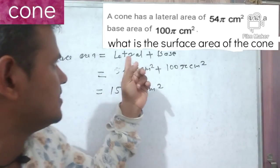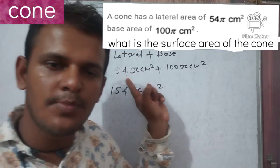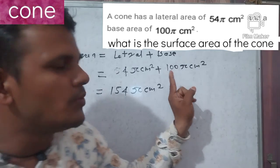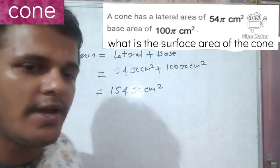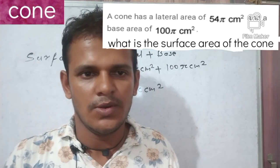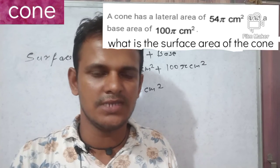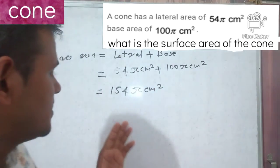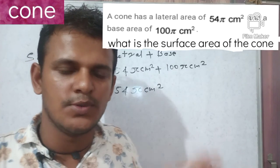The lateral area plus base area: lateral area is 54 pi centimeters squared and base area is 100 pi centimeters squared. Our target was to find the surface area of the cone. The surface area of a cone is simply the sum of lateral area plus base area, so our answer is 154 pi centimeters squared.